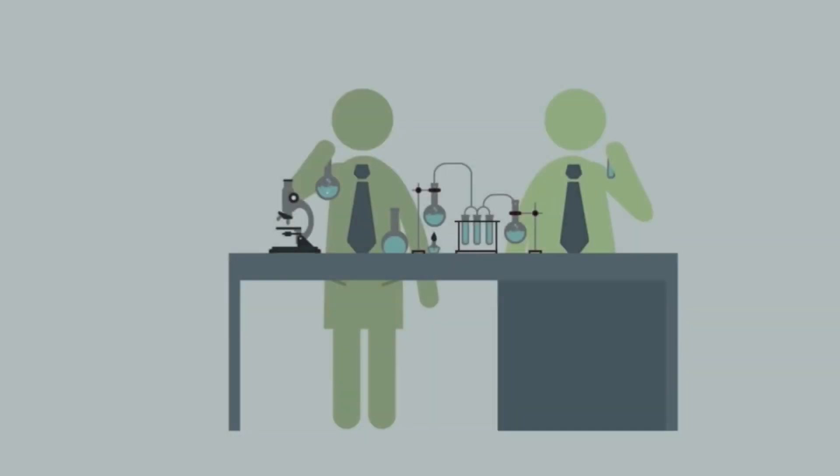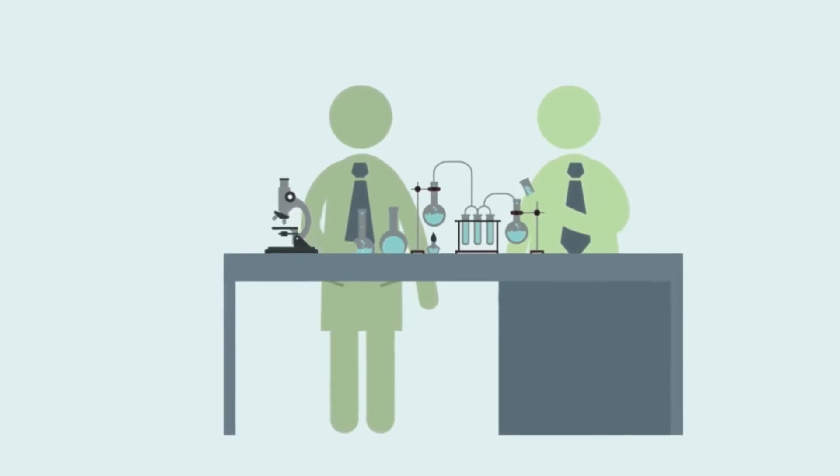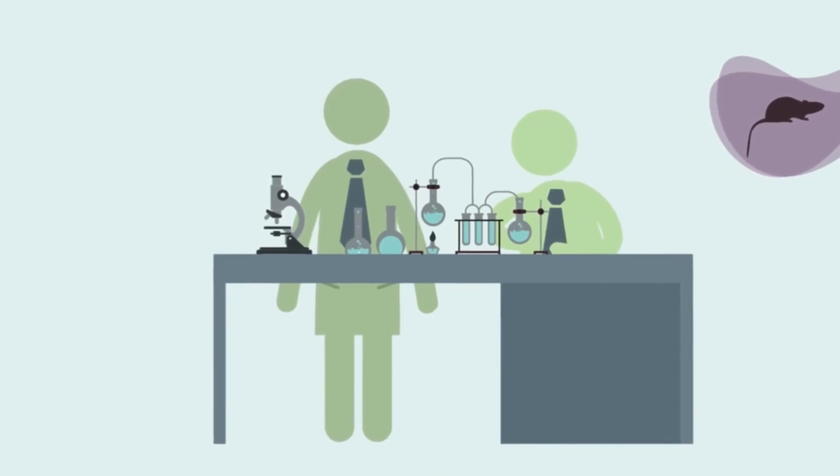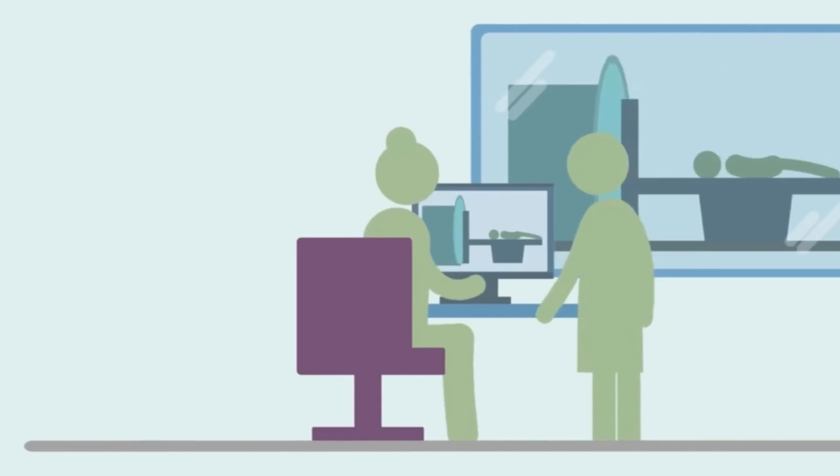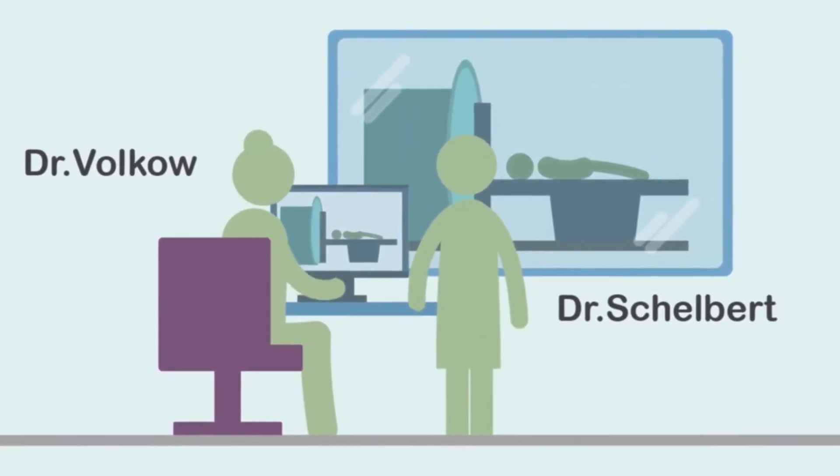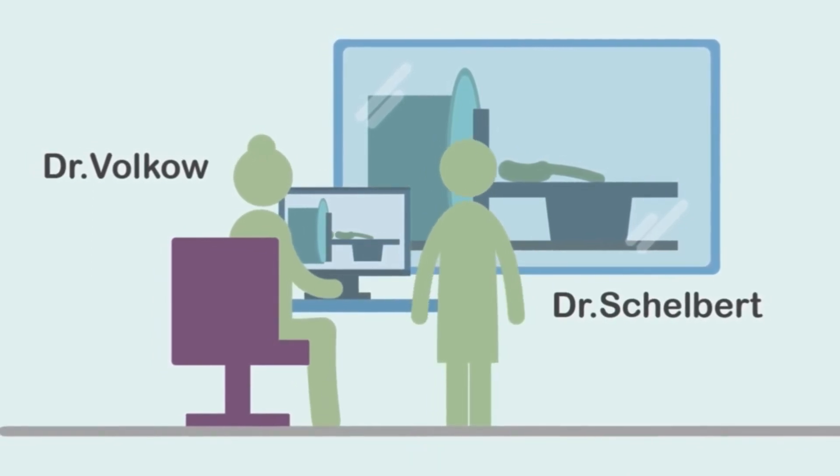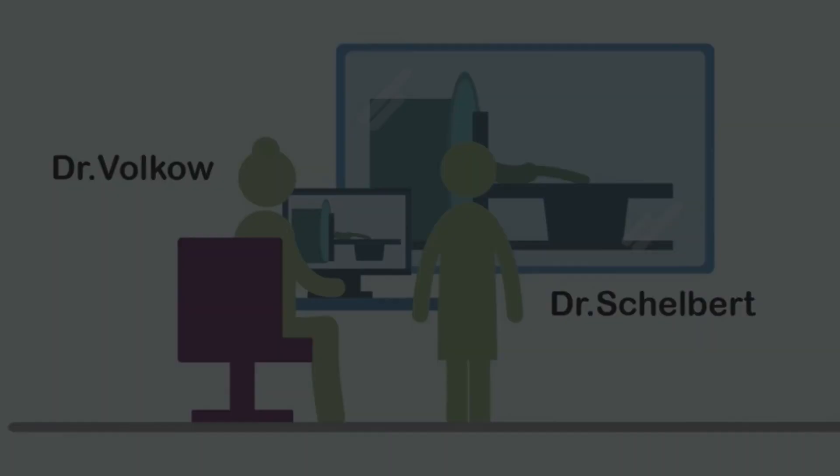Scientists first began to understand addiction as a brain disorder back in the 1950s. Doctors Olds and Milner in laboratory studies of rats found the parts of the brain affected by addiction. But then in 1994, Drs. Volkoff and Shelbert, top neuroscientists, ran PET scans of the brain that showed the effects of substance use disorders. And like other diseases, these scans showed it affected tissue function.